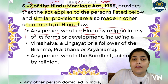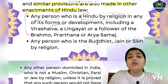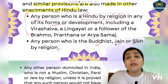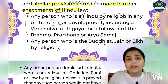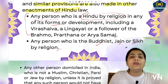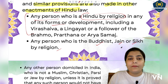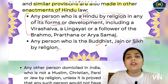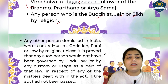The next point: any person who is Buddhist, Jain, or Sikh by religion. The category of Hindu does not include only those who are Hindu by religion — even people who are Buddhist, following Buddhism; Jain, following Jainism; or following Sikhism will also be treated as Hindu under Hindu law. So we keep four categories of people here by religion: those who follow Buddhism, Jainism, Sikhism, and Hinduism.